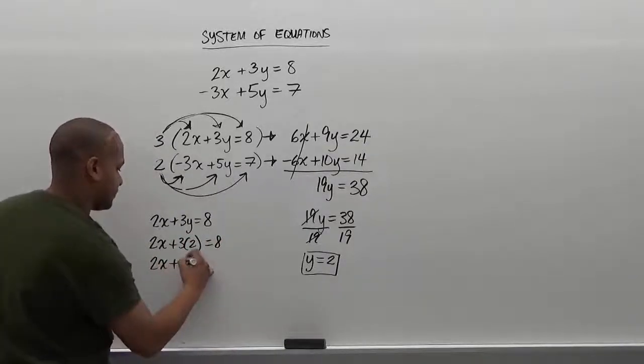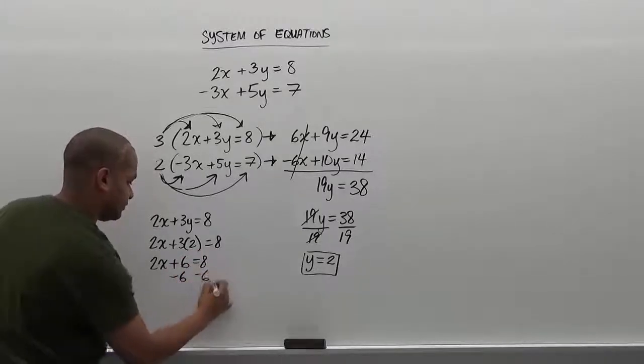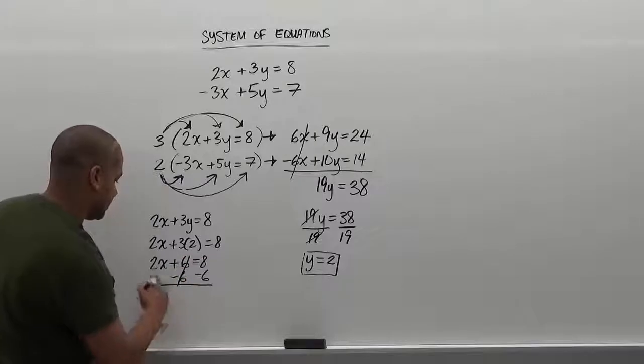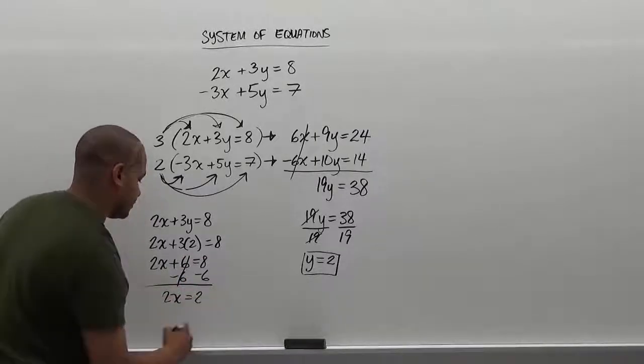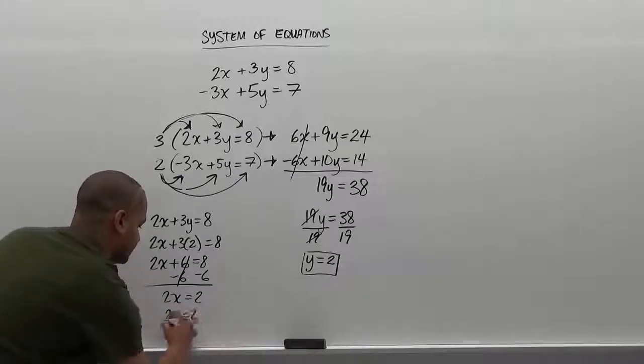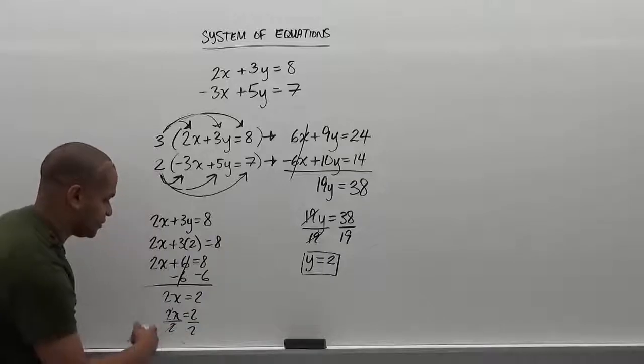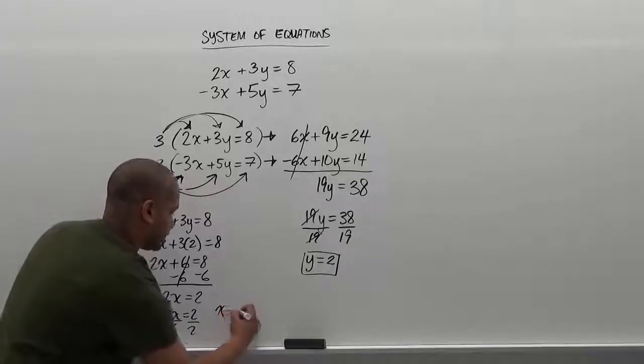This gives us 2x plus 6 is equivalent to 8, which we're going to move the 6 over. The 6s cancel out and we're left with 2x equivalent to 2. Now the final step here to solve is just to divide both sides by 2. These 2s reduce to 1 and we're left with a value of 1 for x.